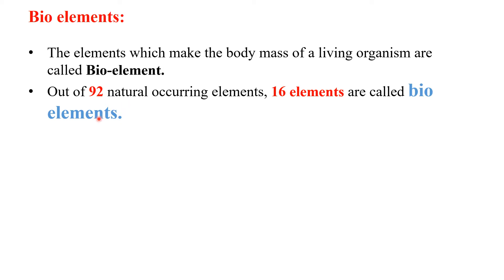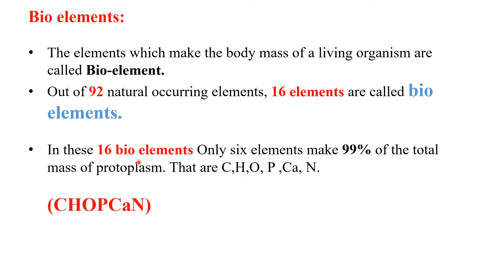Out of 92 naturally occurring elements, 16 elements are called bio elements. Total 123 elements hain, jin mein 92 natural elements hain. In 16 bio elements mein se sirf 6 elements 99% of the protoplasm banate hain, aur remaining 10 elements sirf 1% hain.